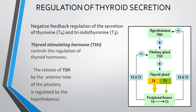These are the pathways. If T3 and T4 levels are high, then the pituitary gland will stop releasing TSH, reducing T3 and T4 in the blood. This is the negative feedback mechanism.